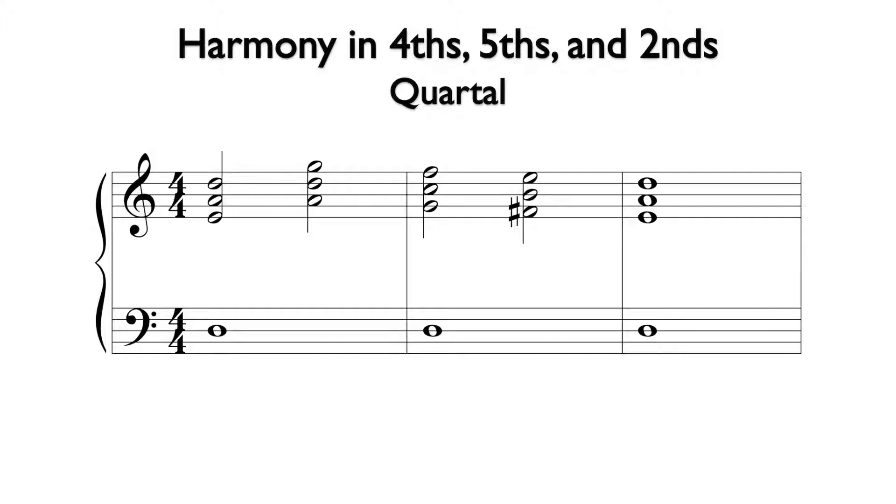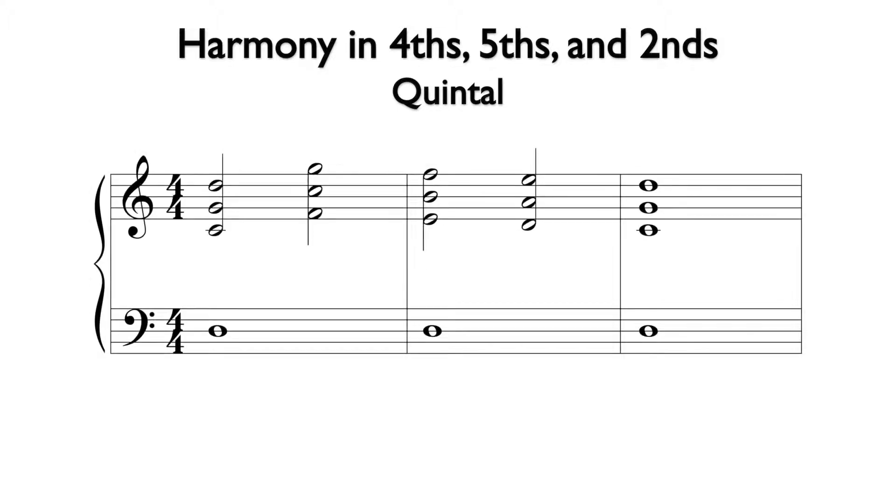For the next example, we will use harmony in fifths. Like the previous examples, we will begin by voicing down from the melody using fifths from the key signature. In most cases, this creates all perfect fifths. The exception is the third chord that has a diminished fifth between the melody and the next note down. Here is the sound of this example.